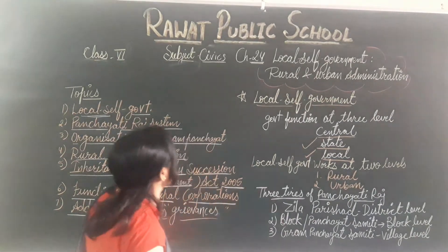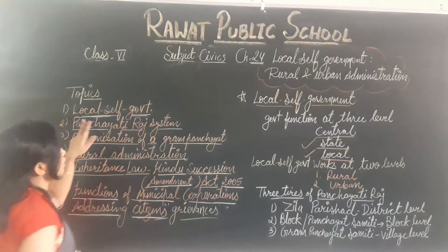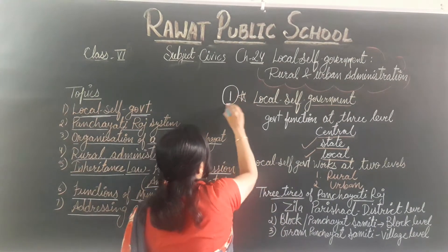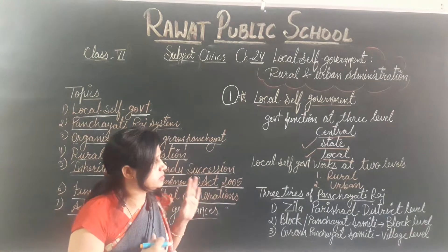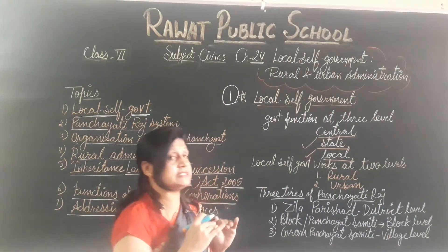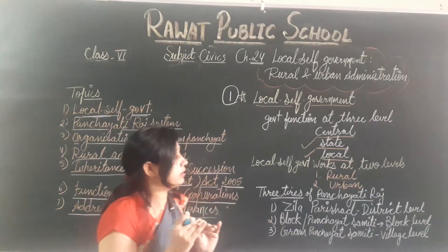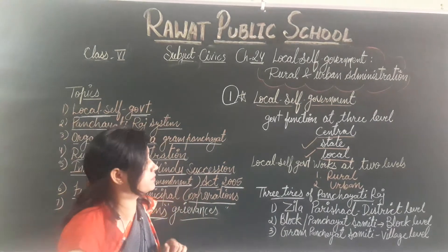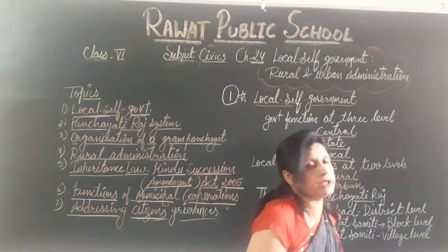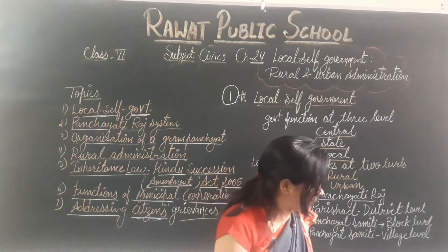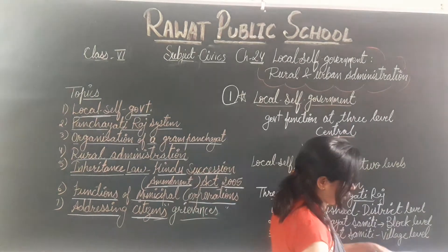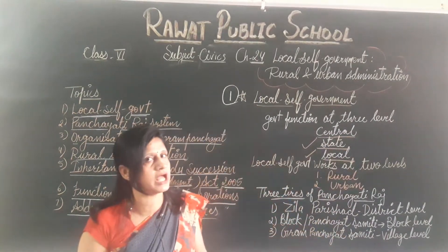So the first topic is Local Self-Government. I will explain this whole chapter according to your book as well, but first you will understand what is the actual main concept of this chapter. As we know, government functions at three levels. First is Central. Second is State. And third is Local Self-Government.